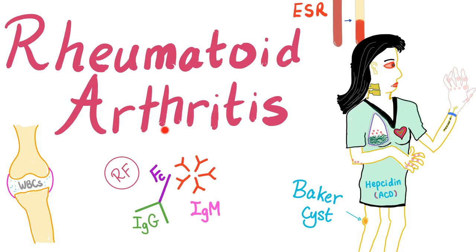Today we'll talk about rheumatoid arthritis again. In the previous video, we started talking about the clinical features and the articular manifestations. Today we'll talk about something weird but very important called atlantoaxial subluxation.